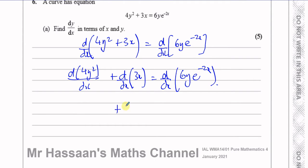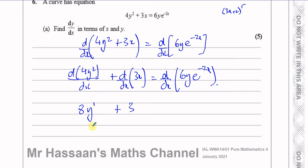Differentiating 3x with respect to x gives 3. Differentiating the 4y-squared term with respect to x, we use the chain rule because y is some function of x. I'll differentiate it as I normally would — for example, with 3x plus 2 to the power of 5, I multiply by the power and take 1 from the power. So 2 times 4 gives 8, to the power of 1. Then I multiply by the differential of the inner function.